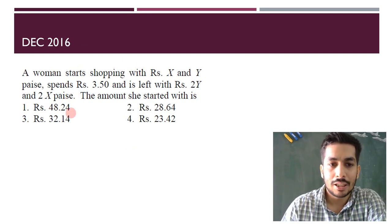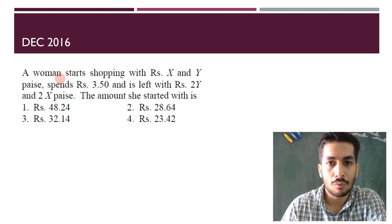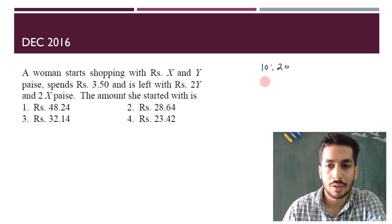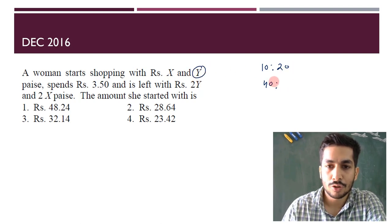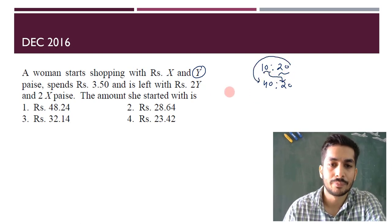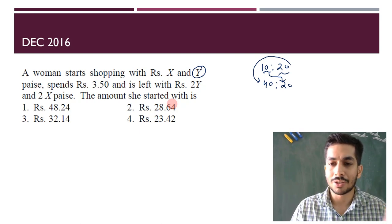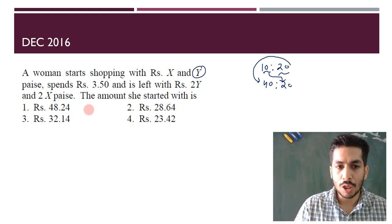Moving to the next question — this is a typical one where you plug in values. A woman starts shopping with X rupees and Y paise and spends 3.5 rupees, and is left with 2Y paise and 2X rupees. Let's say she started with 10 rupees and 20 paise — then she'd be left with something where the paise doubles to 40 and the rupees double. See what the question is saying: Y should double, and X should double, essentially moving across.